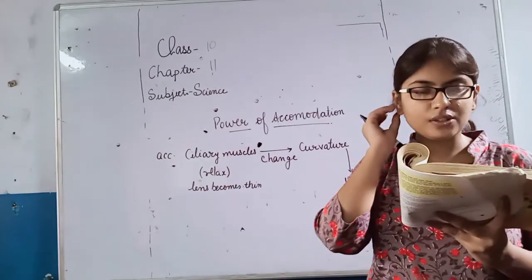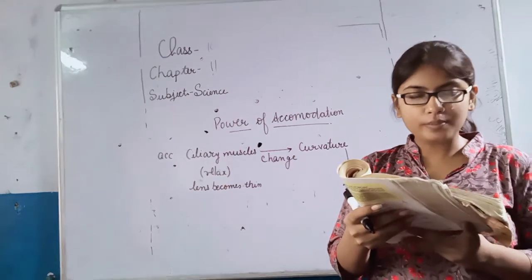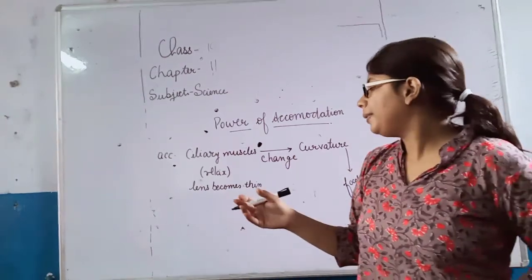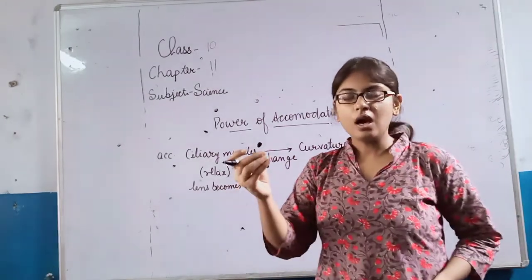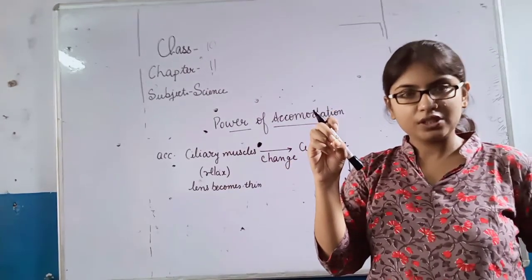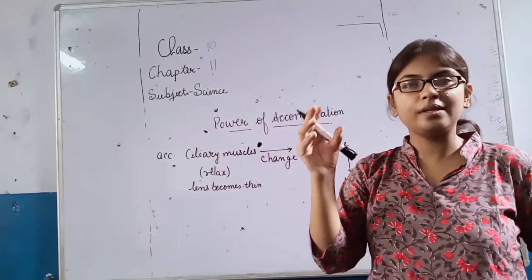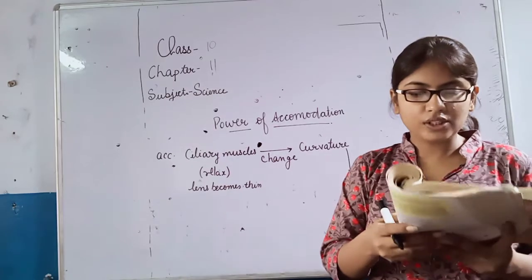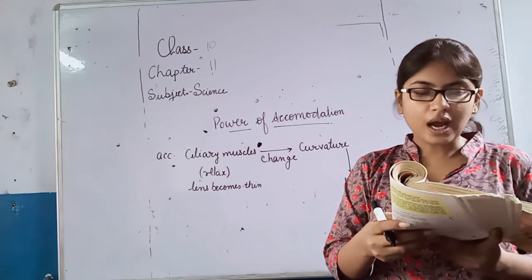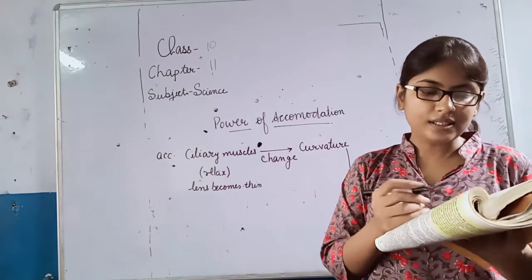This enables us to see distant objects. When objects are oriented closer to the eye, the ciliary muscles contract. This increases the curvature of the eye lens. The eye lens then becomes thicker. Consequently, the focal length of the eye lens decreases.